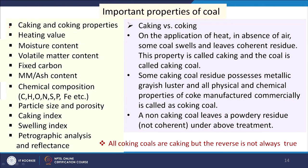Coal can be used in thermal power plants through combustion or through gasification to produce gas. For different application routes, we need to understand the quality of coal. Properties tested include: caking and coking properties, heating value, moisture content, volatile matter content, fixed carbon, mineral matter or ash content, elemental analysis (C, H, N, O, S, P, etc.), particle size and porosity, caking index, swelling index, and petrographic analysis.